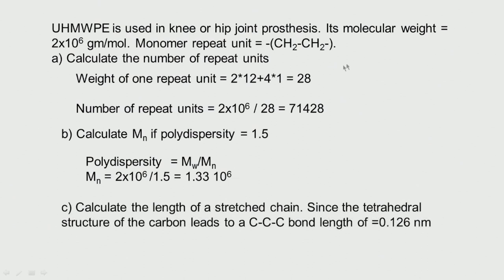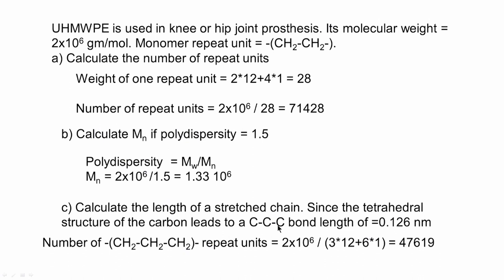Third part: calculate the length of this stretched chain. UHMWPE applies a tetrahedral structure with a C–C–C bond length of 0.126 nm. Taking the repeat unit as three carbons (mass = 3×12 + 6×1 = 42), the number of such repeat units = 2×10⁶ ÷ 42 = 47,619. Multiplying by 0.126 nm gives 6,000 nm, which is 6 microns.